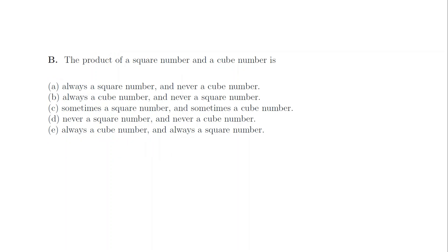1b. If you try some small square and cube numbers, you'll find, for example, 1 times 1 is 1, but 4 times 8 is 32, which is neither square nor cube. So the answer is sometimes a square, sometimes a cube, and the answer is c.